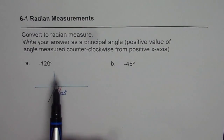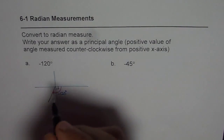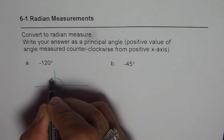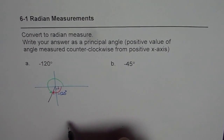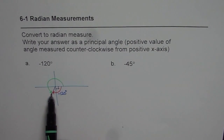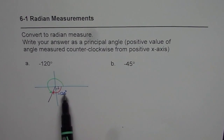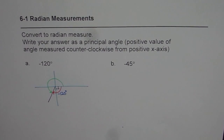We need to convert this to radians and then write it as a positive principal angle, always measured from the initial arm along the x-axis. One approach is to convert degrees to the principal angle in degrees first, then convert to radians. The second possibility is to directly convert to radians as negative and then adjust. Both ways work — we'll adopt one method here and the other on the next example.